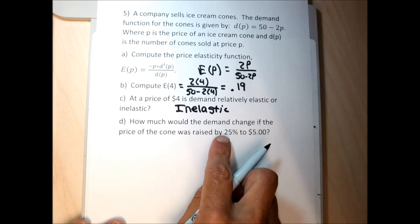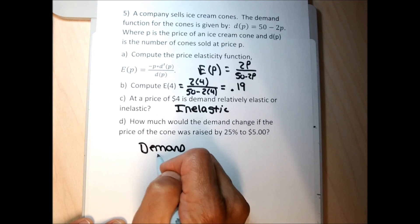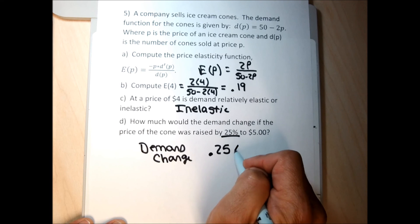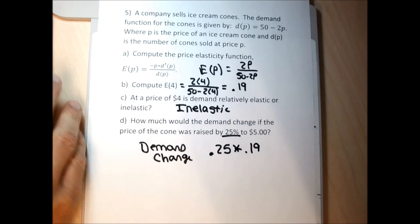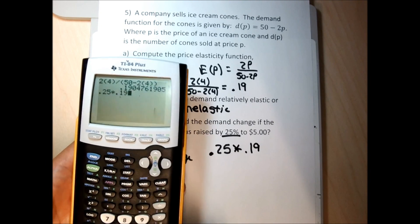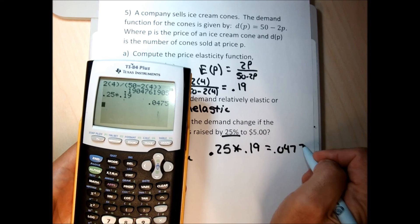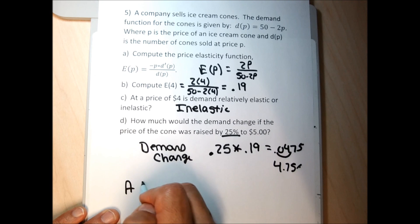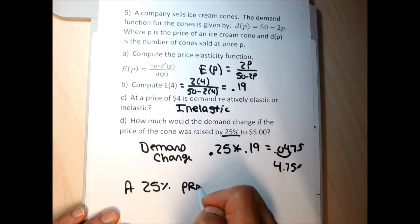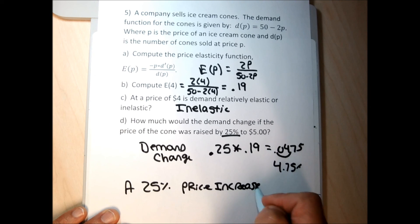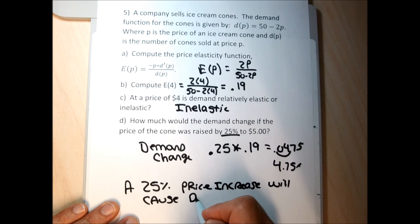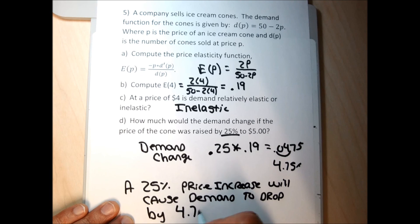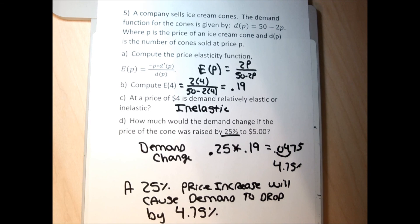Last part: if the price is raised by 25%, how much would demand change? The demand change equals the percent price increase as a decimal — 25% becomes 0.25 — times the price elasticity value of 0.19. So 0.25 times 0.19 equals 0.0475, which is 4.75%. A 25% price increase will cause demand to drop by 4.75%. Round everything to two decimals when you get decimals in this section.